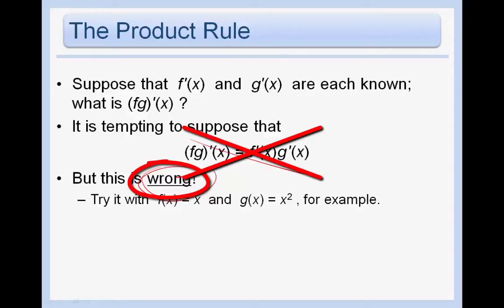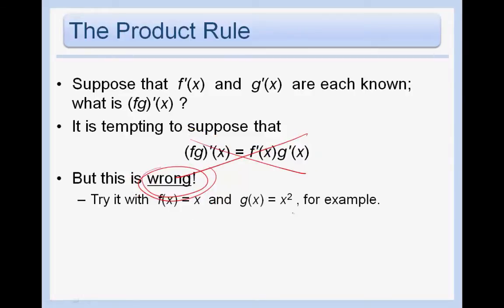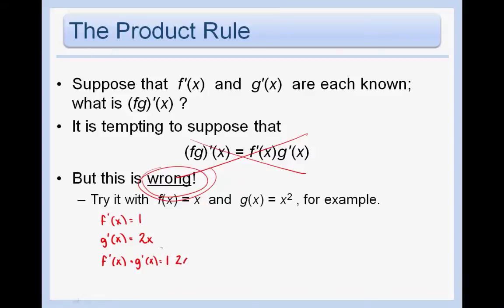Let's just try it with a simple example. Let's suppose that f of x equals x and g of x equals x squared. Here, if we have f prime, that would just be 1, and g prime of x is going to be 2x. Therefore, f prime of x times g prime of x is going to give us 1 times 2x, or just 2x.